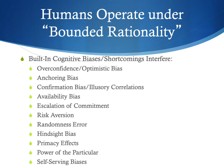We have a limited capacity to process information, so we just can't process as much information as we would like or as quickly as we would like. And we often don't have all the information we need to make a perfectly rational decision. So it's going to be hard to solve very complicated problems in a completely rational way, because most of the time we don't even know what we don't know.